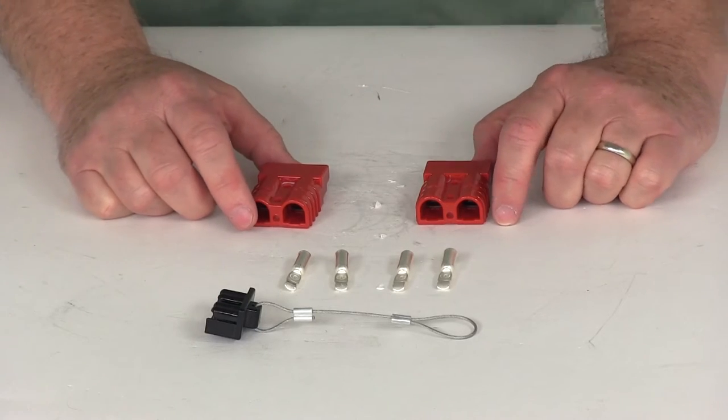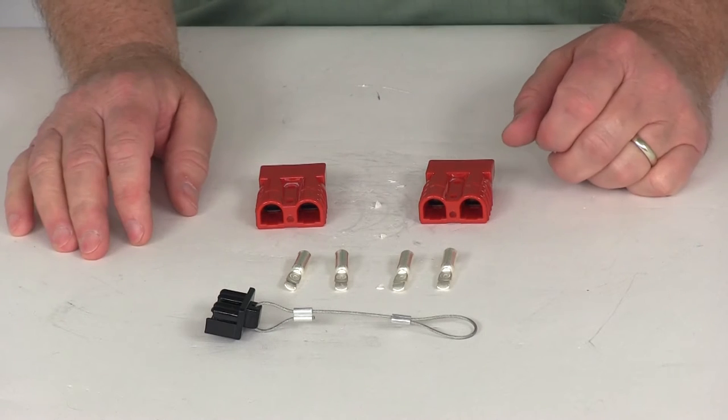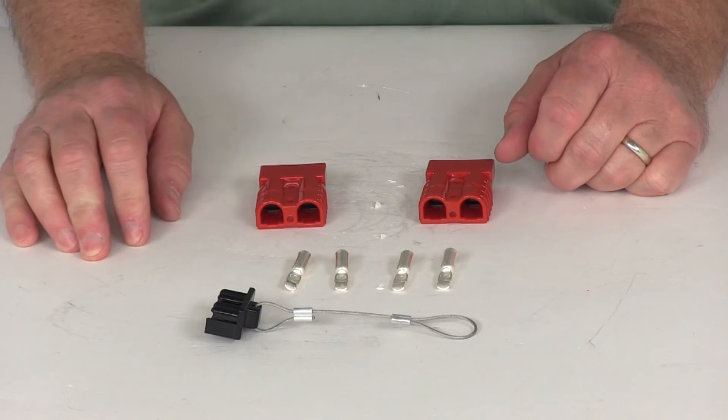Today we're going to review part number BDW20047. This is the Bulldog electrical quick connect set for the Bulldog Power Sport winches.